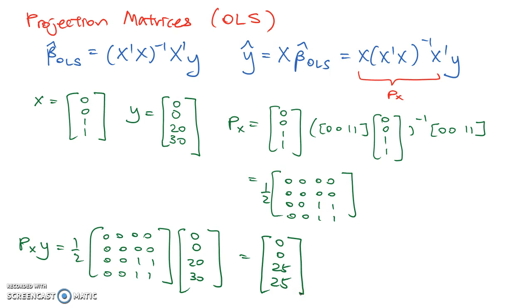And recall, this 4 times 1 matrix with values of 0 and 25 is your predicted values of y. In other words, for these 2 people that don't work, their predicted value is 0, or their projected wage is zero. For those that work, their predicted wage is 25.